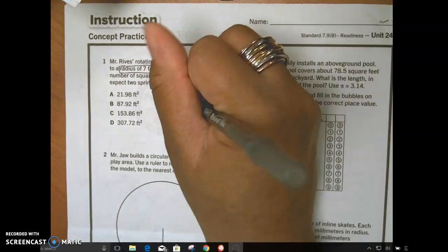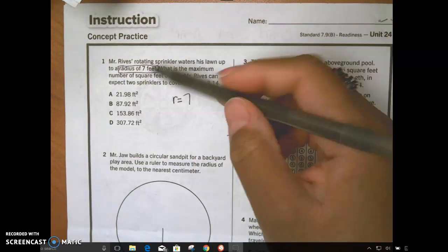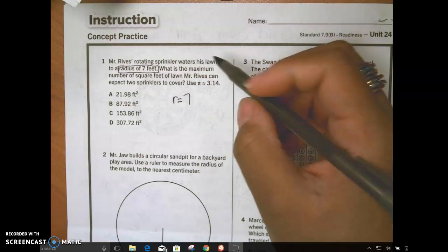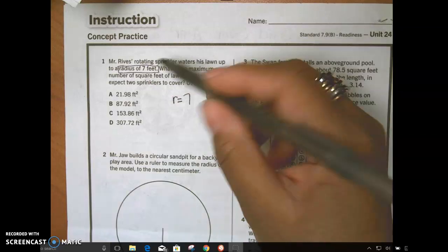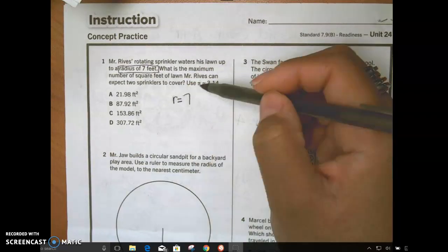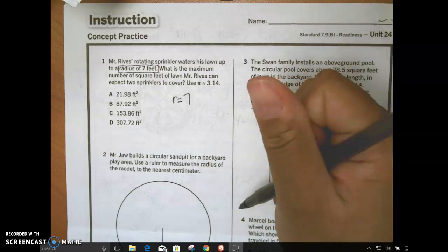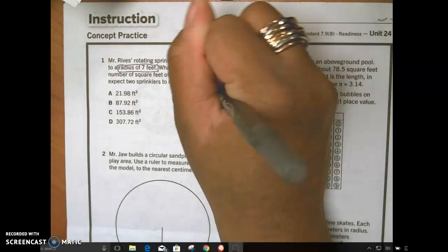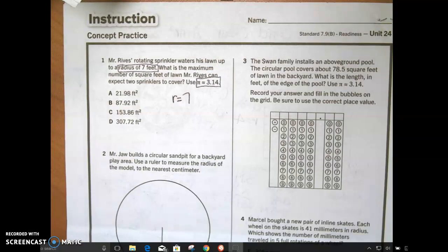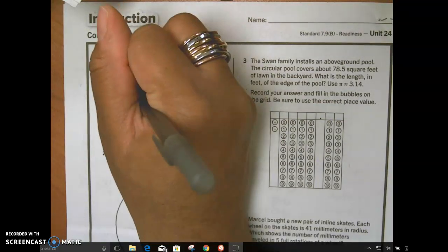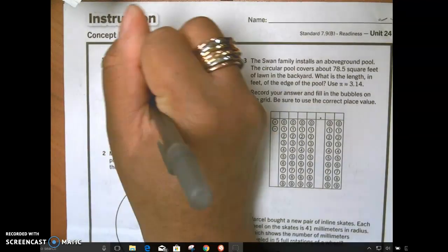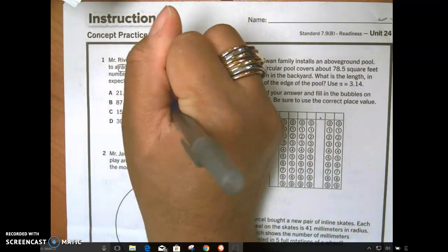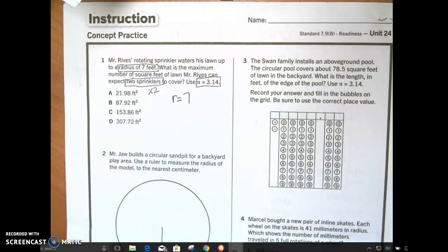So my radius is seven feet. What is the maximum number of square feet of lawn Mr. Revis can expect two sprinklers to cover? Use 3.14 for pi. What else is important? Of course, pi. What else is important that's written in the question? Two sprinklers, which means what? Times two. What times two, though? Trick question.